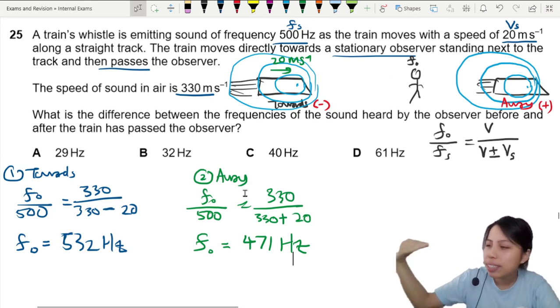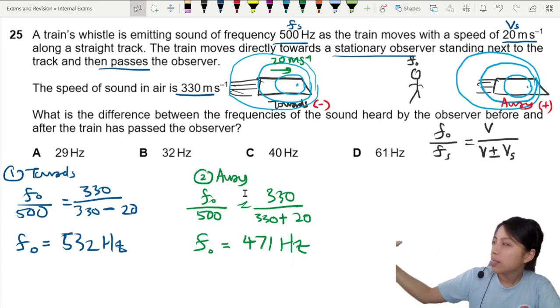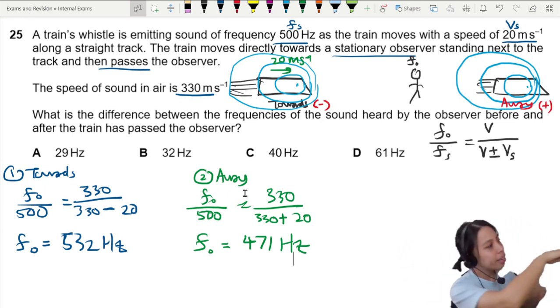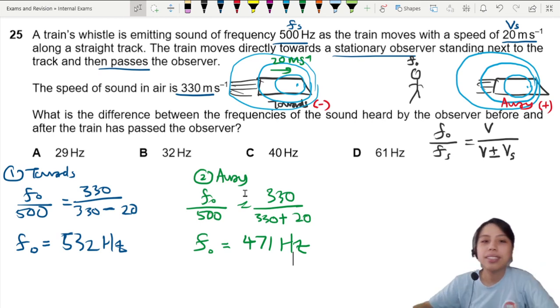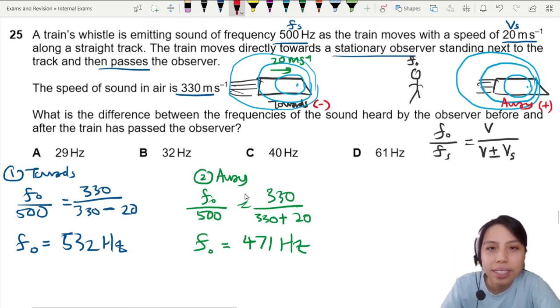So I could do something like this. The train is coming towards me—sounds sharper, right? Higher pitch. And it goes away. You can try that in the car. You just go stand by the roadside and hear car that horn.